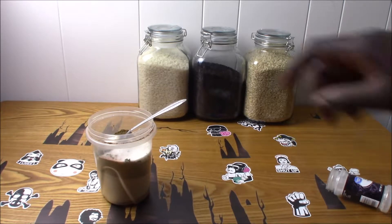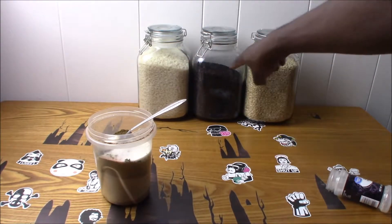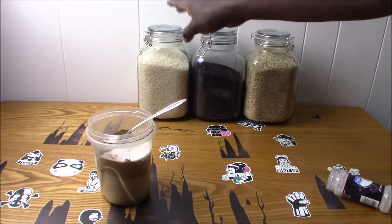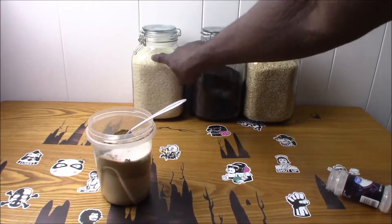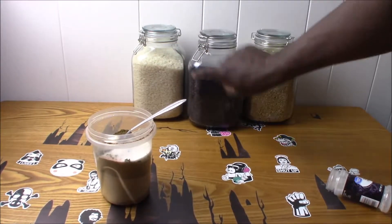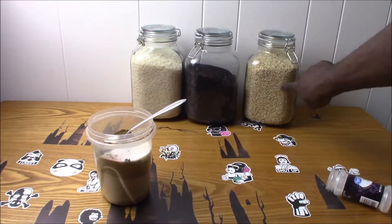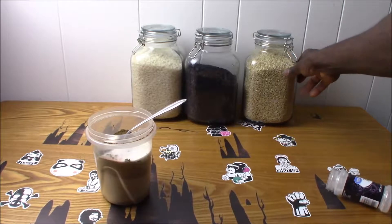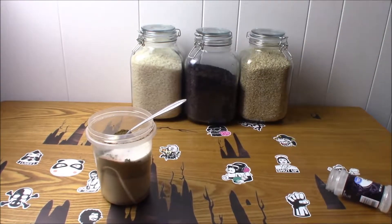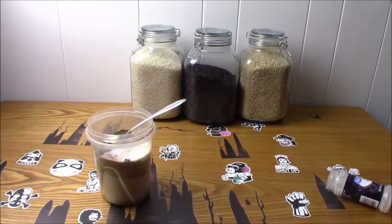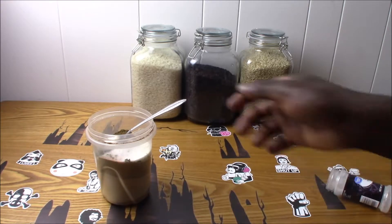Oh, I don't know if you guys are wondering, you guys can see this back here. This is white jasmine rice. This is black rice. And this over here is brown rice. So that's what these three jars are, if you guys were wondering what those were back there.